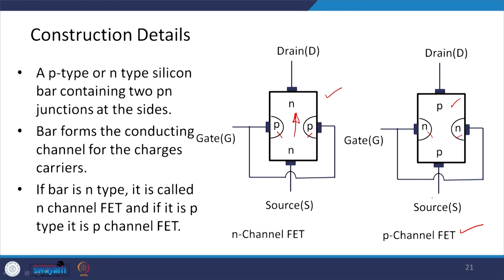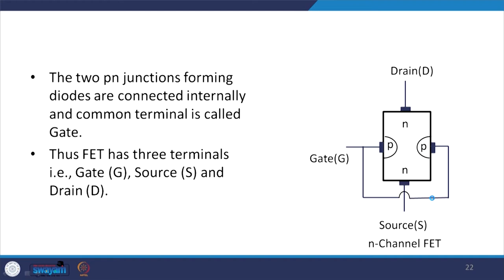The two p-n junctions forming diodes are connected internally, and the common terminal is called the gate. Thus, the FET has three terminals: gate, source, and drain. Source and drain are interchangeable. Here only the n-channel FET is shown, but a similar explanation applies for the p-channel FET.